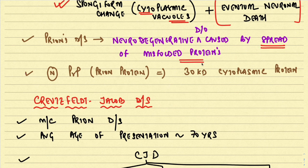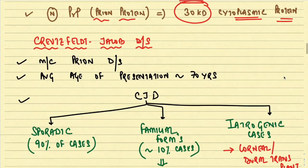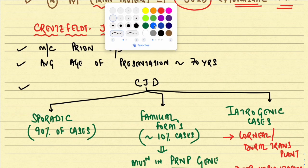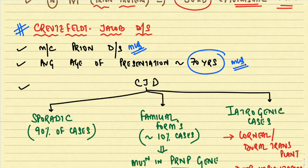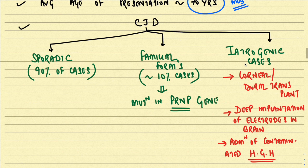Prion's disease is a neurodegenerative disorder caused by the spread of misfolded protein. One important MCQ: the normal prion protein is a 30 kilodalton cytoplasmic protein. Coming to Creutzfeldt-Jakob disease — this is the most common prion disease, and the average age of presentation is around 70 years.